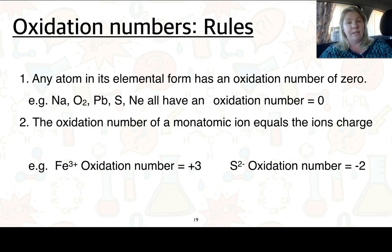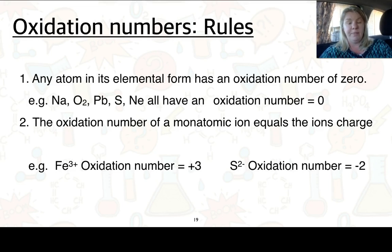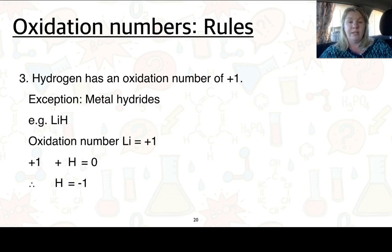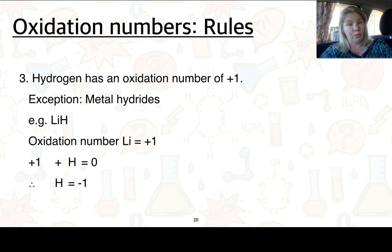Here are the rules, summarising the notes on page 388. Rule 1: an atom in its elemental form has an oxidation number of zero — so Na on its own, O2, Pb — the oxidation number is zero. Rule 2: the oxidation number of a monatomic ion equals the ion's charge — so Fe3+ has oxidation number +3, and S2− has oxidation number −2. Rule 3: hydrogen has an oxidation number of +1, with some exceptions. Metal hydrides are one of those — in lithium hydride, lithium is +1, so hydrogen must be −1 for the compound to equal zero overall.